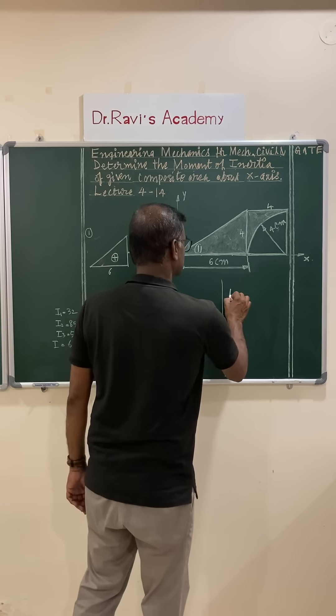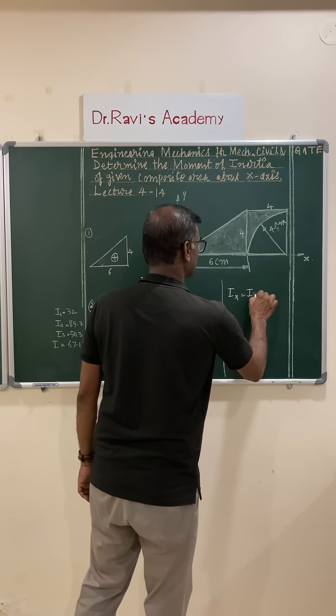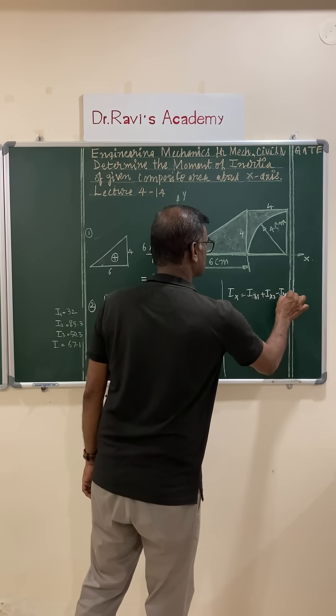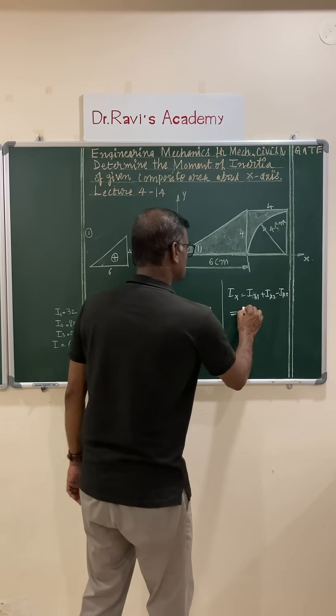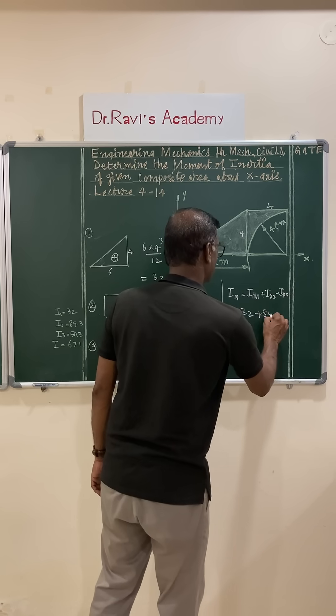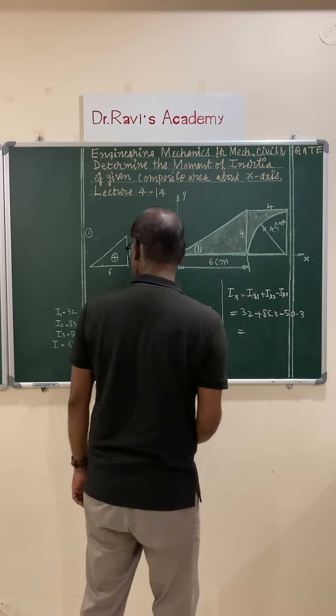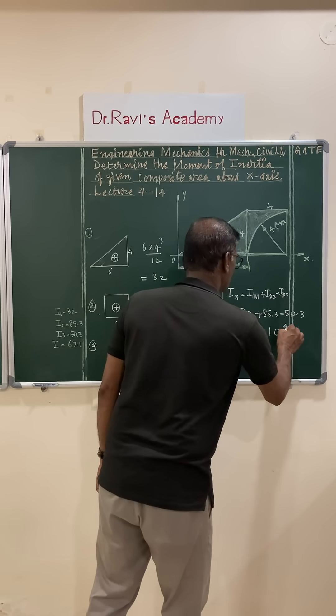So, total moment of inertia about x-axis is, ix is equal to i1, that is, ix1 plus ix2 minus ix3. ix3 is minus. So, this value is 32 plus 85.3 minus 50.3. You are going to get this value 67.1 centimeter to the power 4.